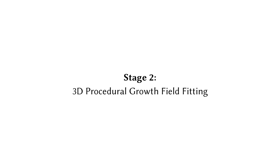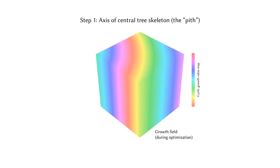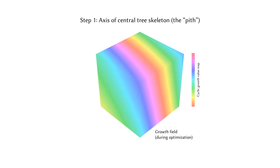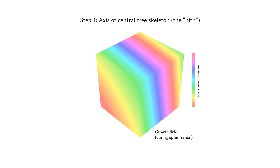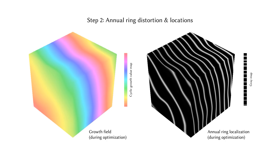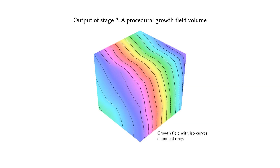In the next stage, our goal is to fit a 3D procedural growth field to the structural information acquired in the previous stage. We first optimize the axis of the central tree skeleton, which is a parameter of the procedural growth field. We continue to optimize growth field distortions and the gray map for annual ring localization in parallel. The output of this stage is the procedural growth field and the ISO values of its annual rings.